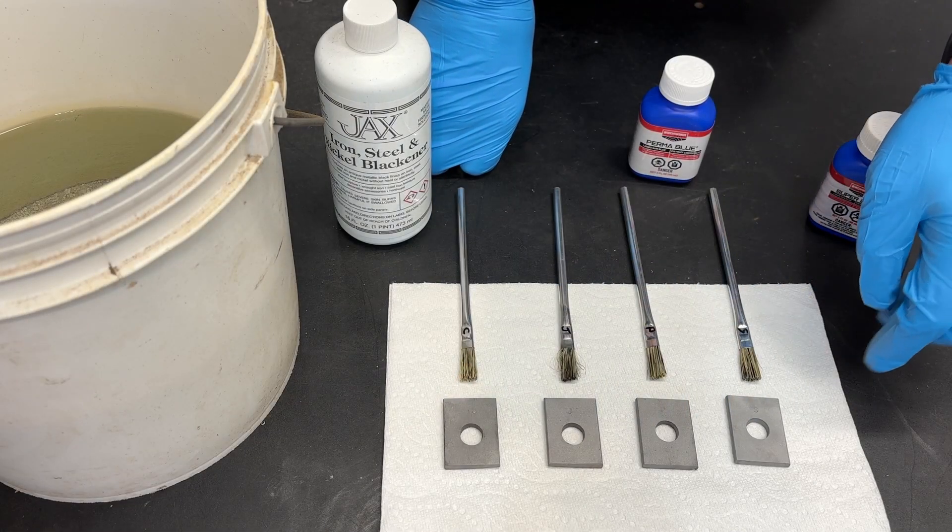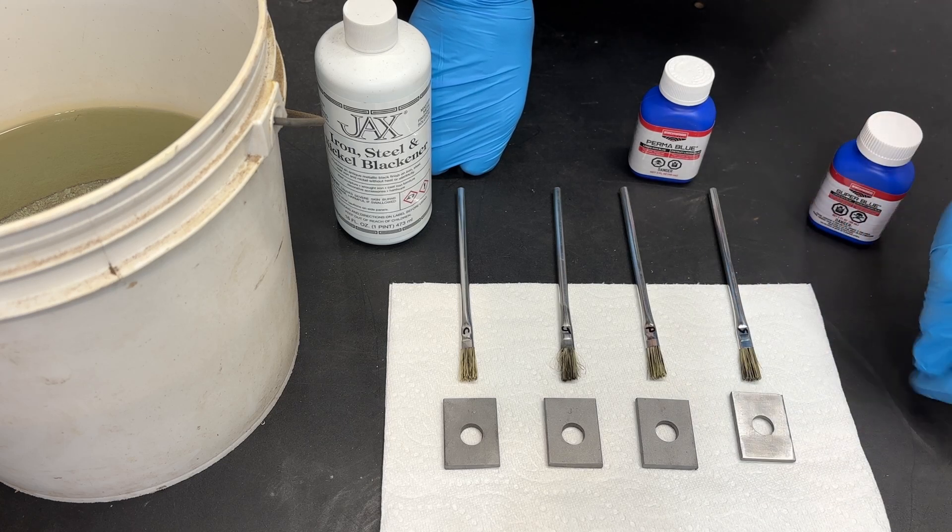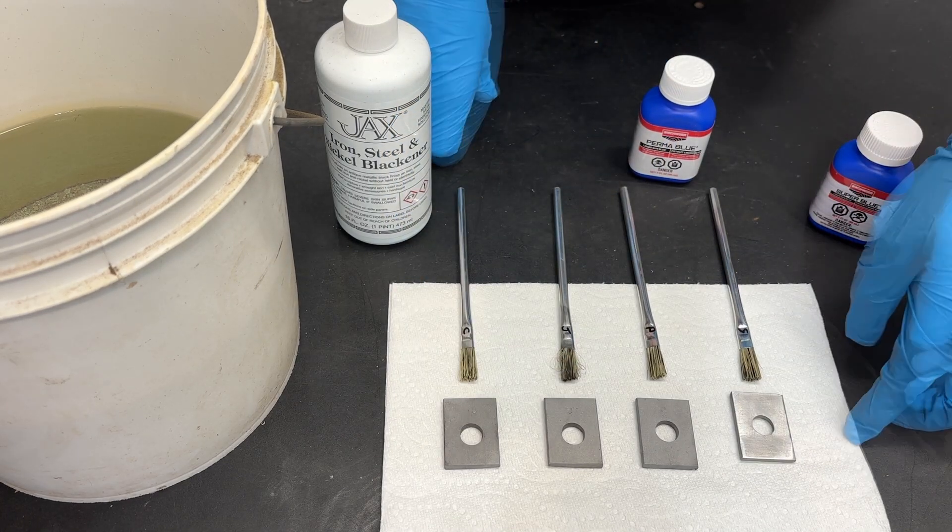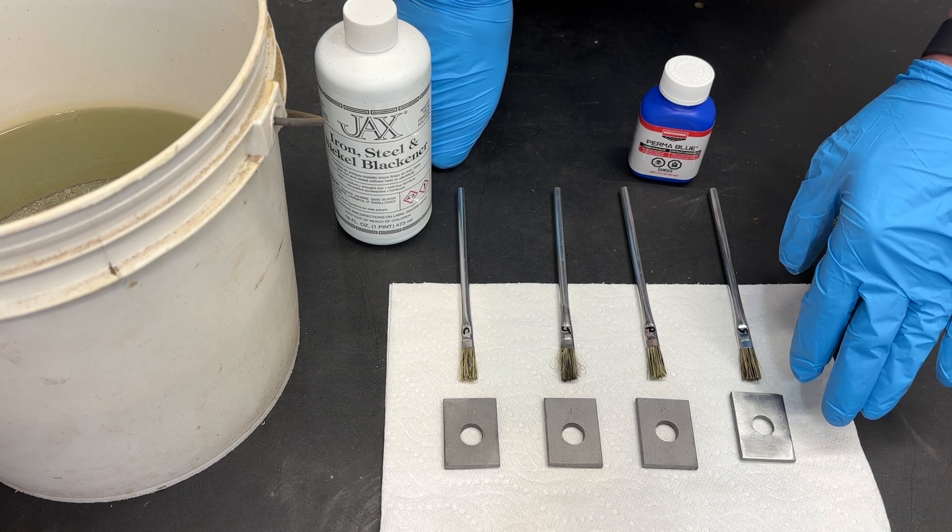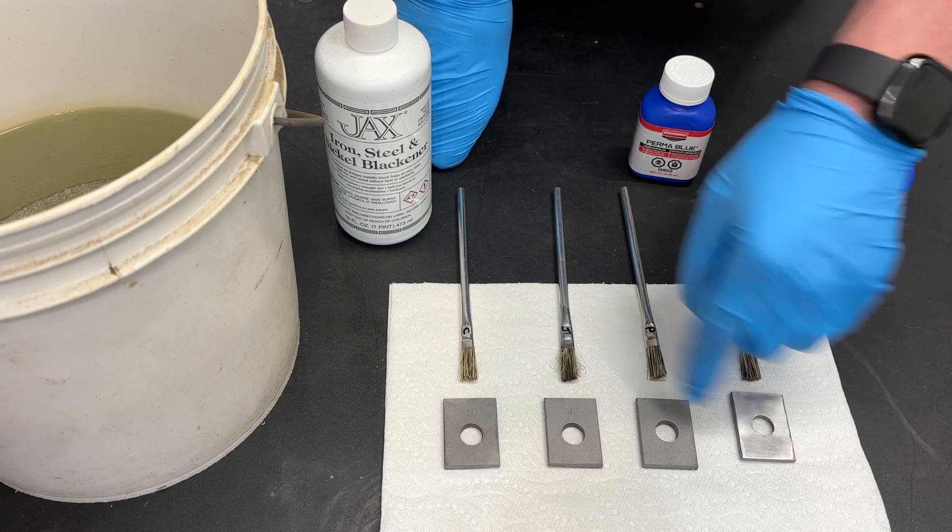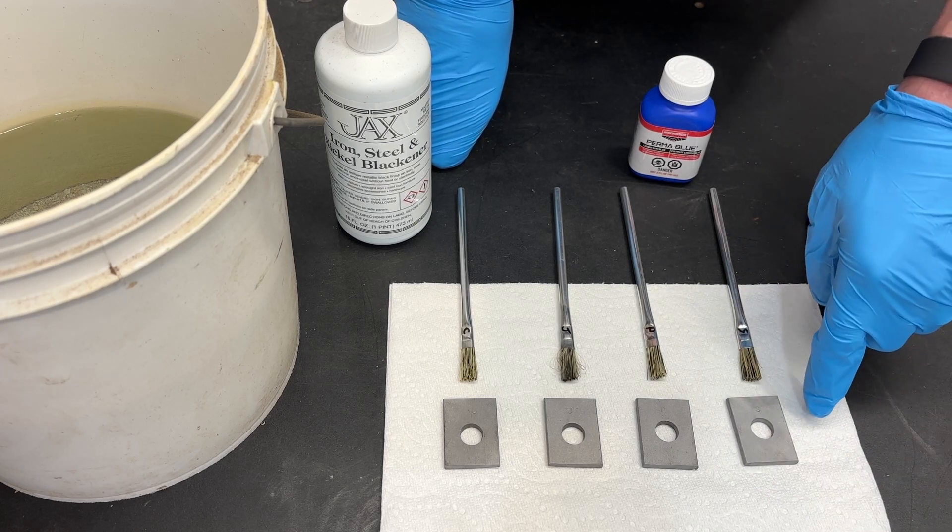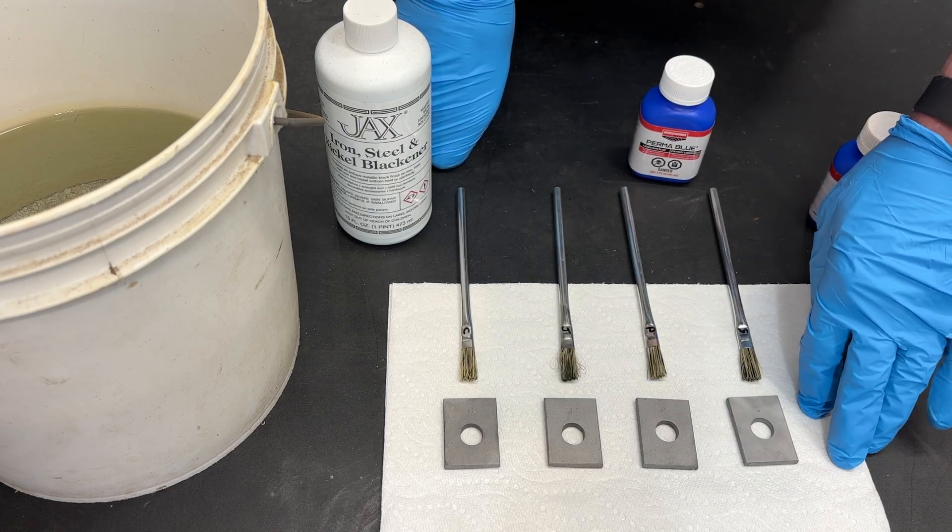All four of these pieces of steel were sandblasted to eliminate the mill scale and then on one side they were polished. Now I found with black oxide coating that a polished surface doesn't coat as well as a sandblasted surface. So more often than not, I sandblast. But I figured this would be a great test for all of these solutions.